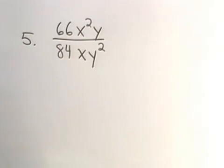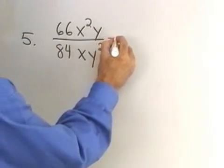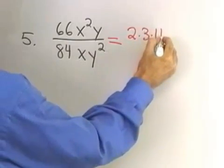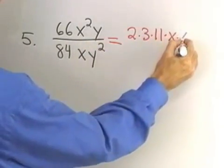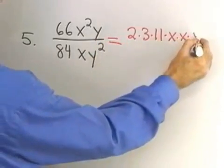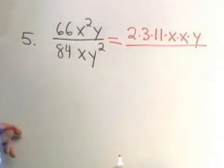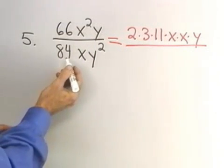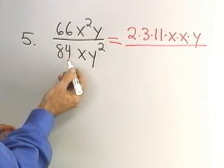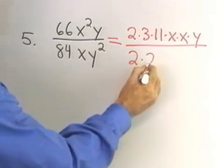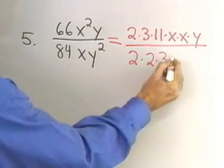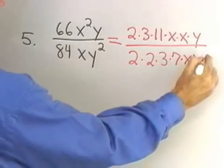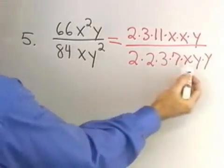66x squared y over 84xy squared. 66 is 6 times 11, so 2 times 3 times 11. x squared is x times x, and then I have that factor y. So, there's all the factors of the numerator lined up. Let's see, 84 is going to be 2 times 42. 42 is 6 times 7, so I'll have 2 times 6, which is 2 times 3 times 7. So, there's 84 times x times y times y, because y squared has two factors of y.